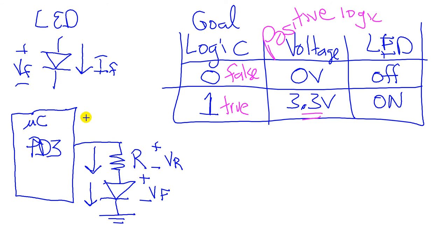Let's assume that the output is high. This is a one in the logic, which is going to give me 3.3 volts here. And that's going to generate current flowing in this direction. And we want the LED to be on.